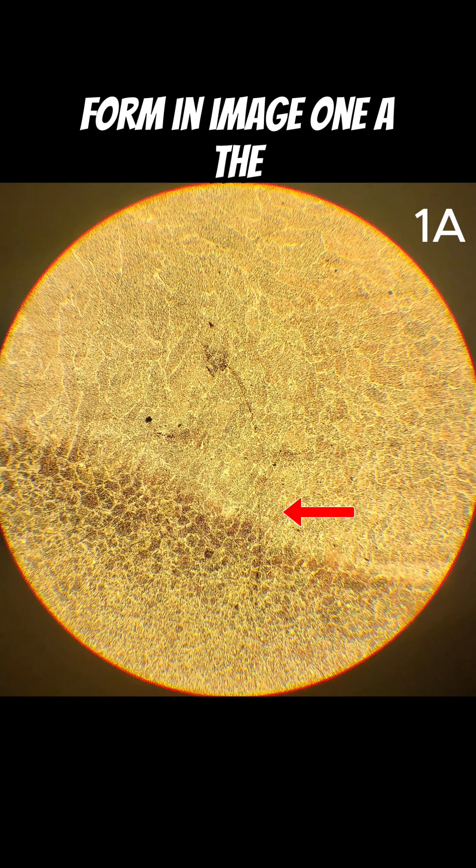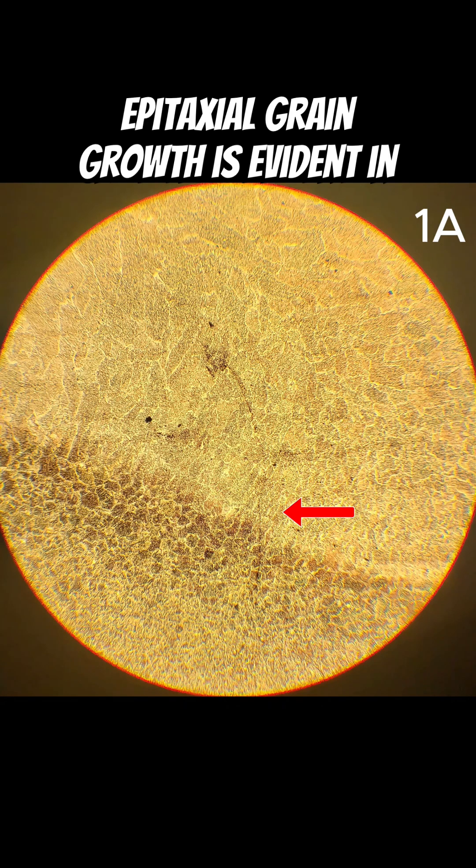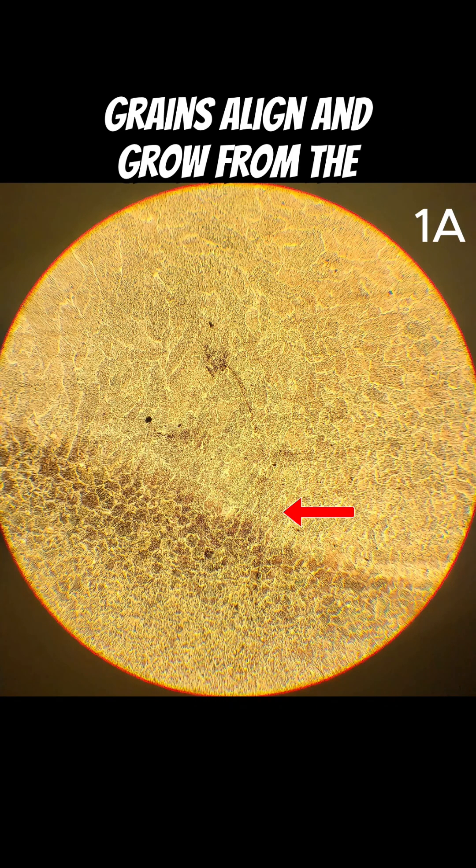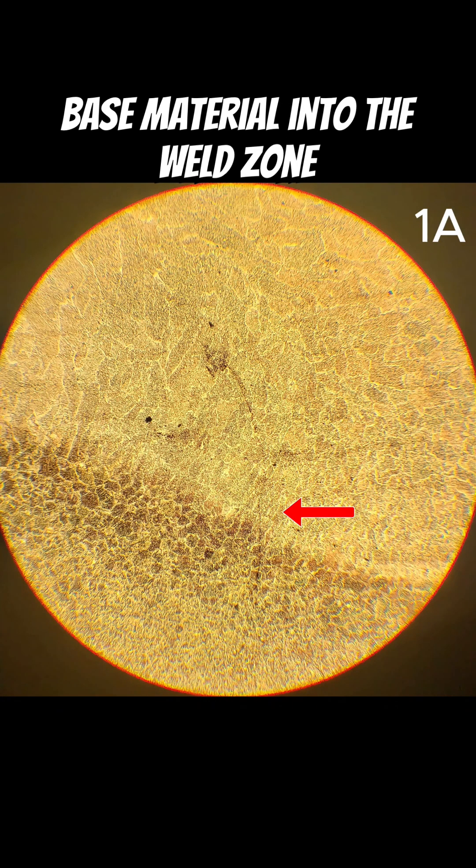In image 1, epitaxial grain growth is evident in the area marked by the arrow. It shows a transition where the grains align and grow from the base material into the weld zone.